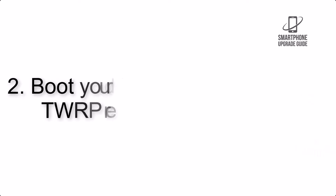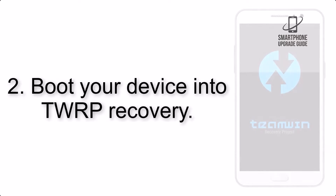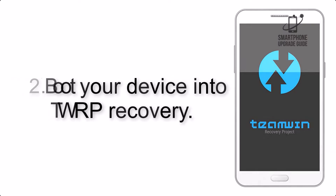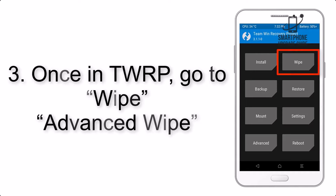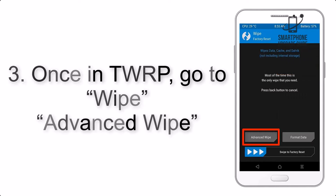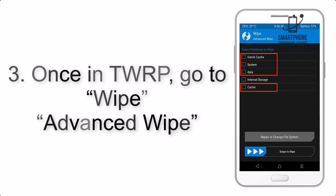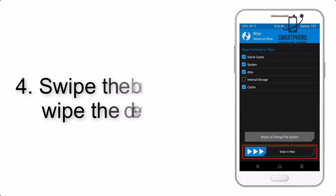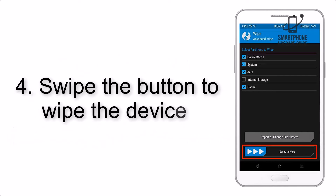Step 2: Boot your device into TWRP recovery. Once in TWRP, click on Wipe, then Advanced Wipe, and select the checkboxes as shown in the image, excluding internal storage.